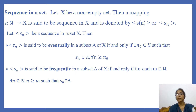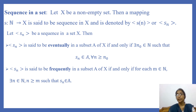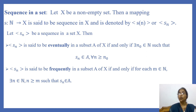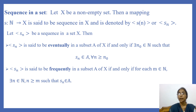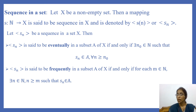Let S_n be a sequence in a set X. Then the sequence S_n is said to be eventually in a subset A of X if and only if there exists a natural number n_0 such that S_n belongs to A for every n greater than or equal to n_0. That means, except for a finite number of terms, infinitely many terms of the sequence belong to A. That is, S_1, S_2, ..., S_{n_0 - 1} are not belonging to A, but after that all terms of the sequence belong to A.